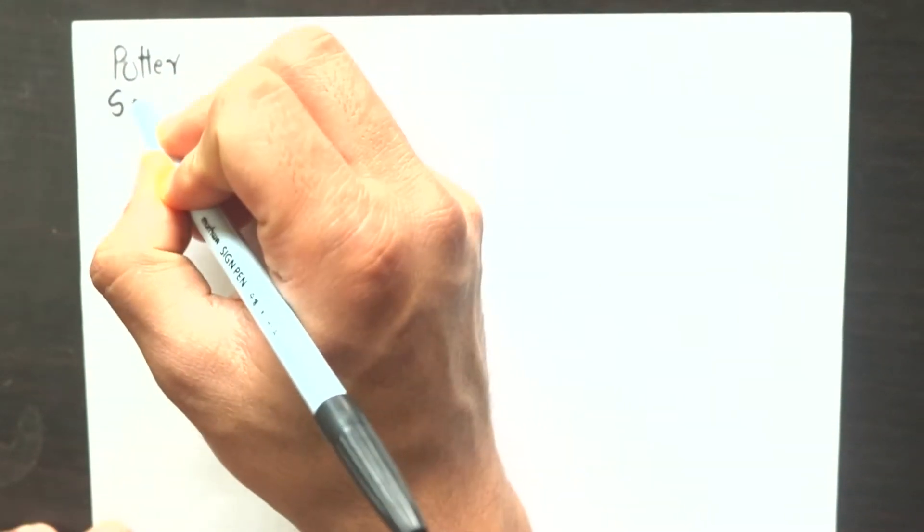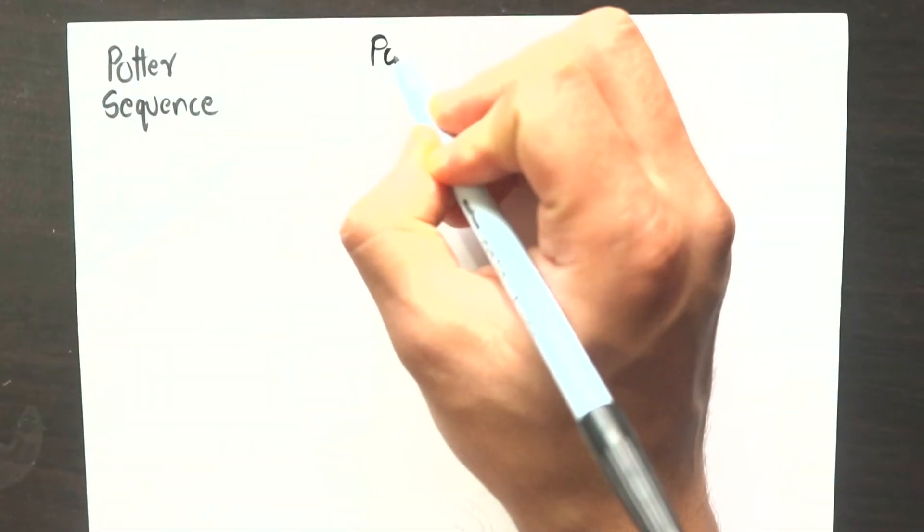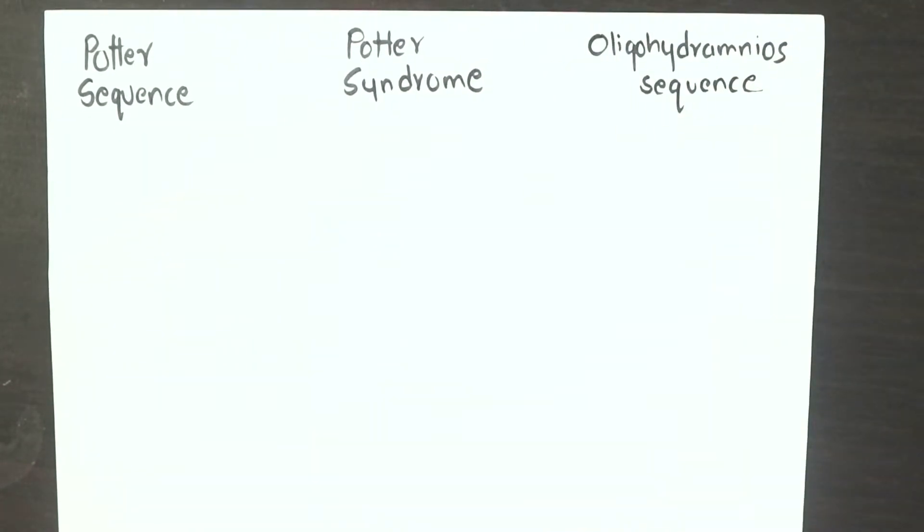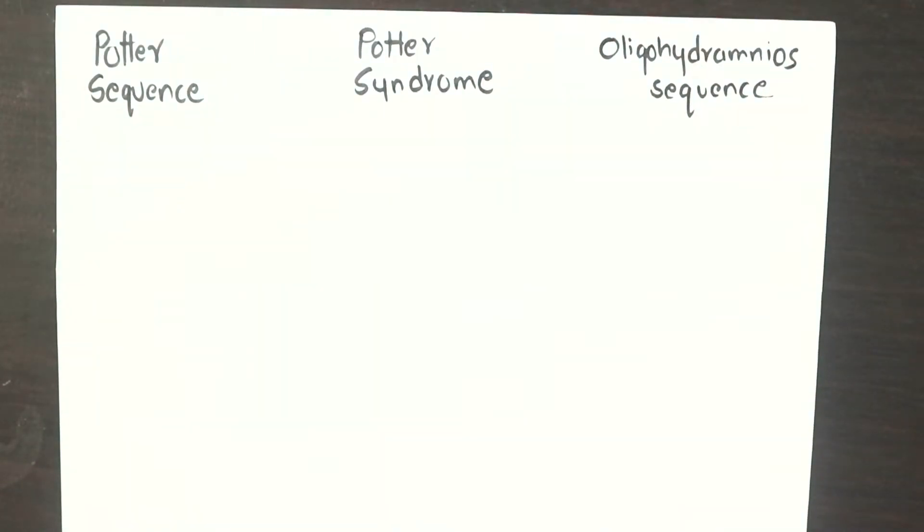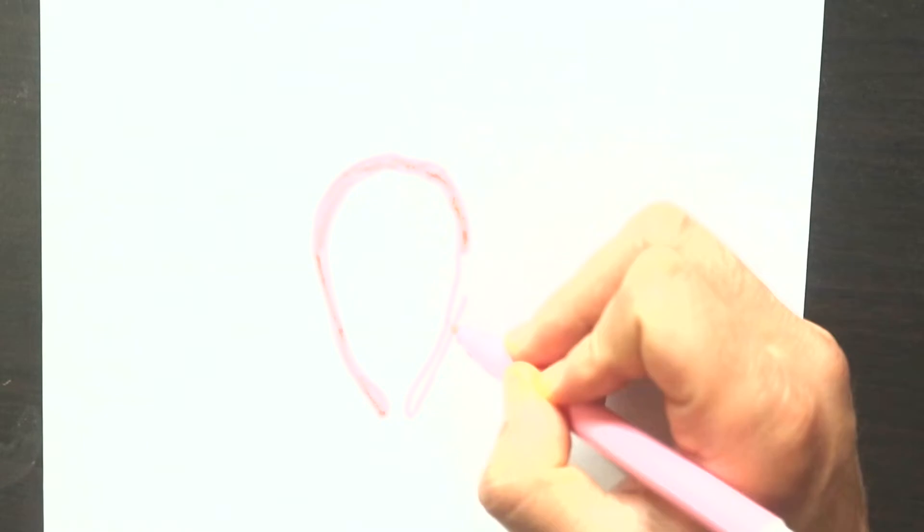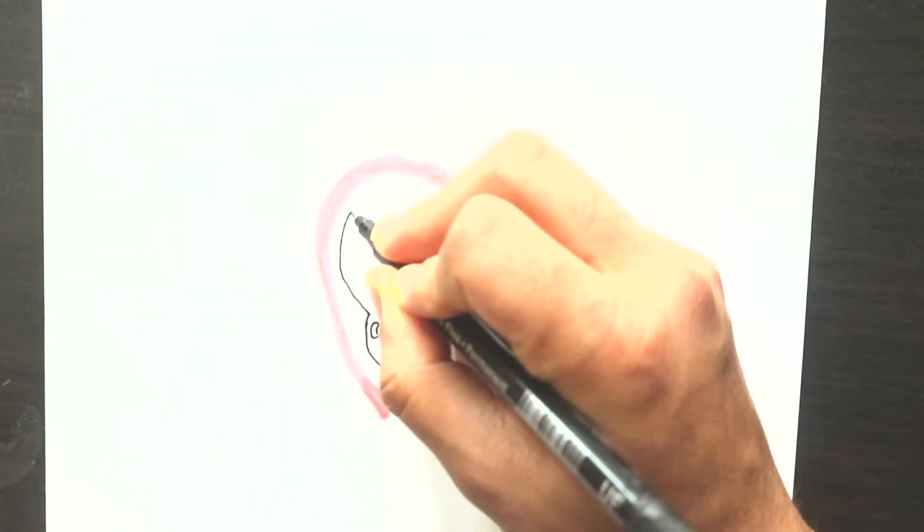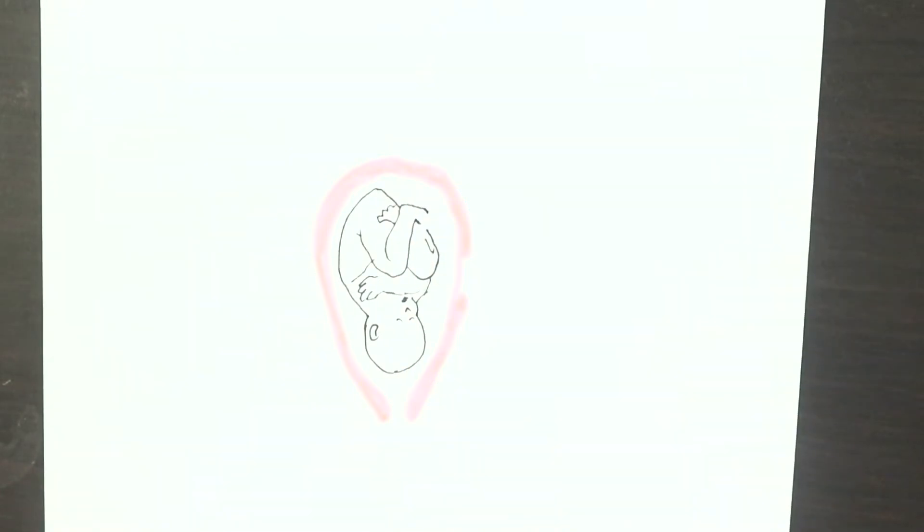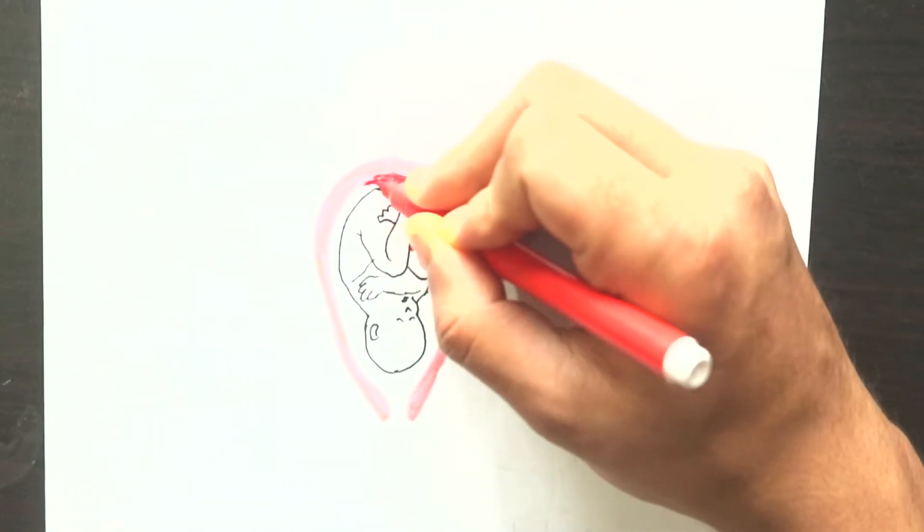In this video we're going to learn about Potter Sequence, also known as Potter syndrome or oligohydramnios sequence. The problem in Potter Sequence arises due to a condition called oligohydramnios, which means low volume of amniotic fluid in the amniotic sac during pregnancy.